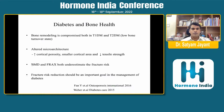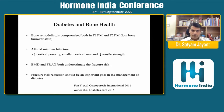Bone remodeling is compromised in both type 1 and type 2 diabetes — it is a low bone turnover state, occurring due to alterations in bone microarchitecture including increased cortical porosity, smaller cortical area, and decreased tensile strength. BMD and FRAX both underestimate fracture risk in diabetic patients, so they are not reliable and a correction factor should be used.